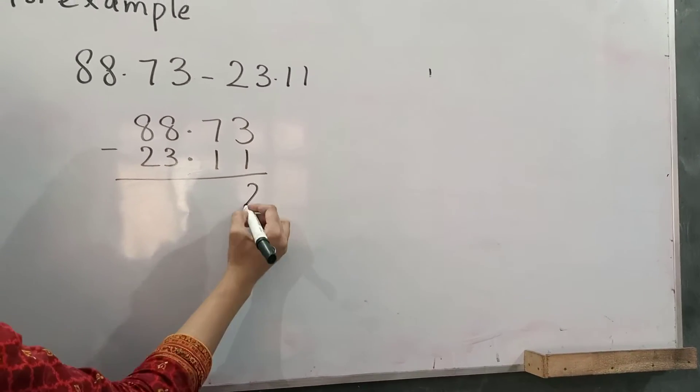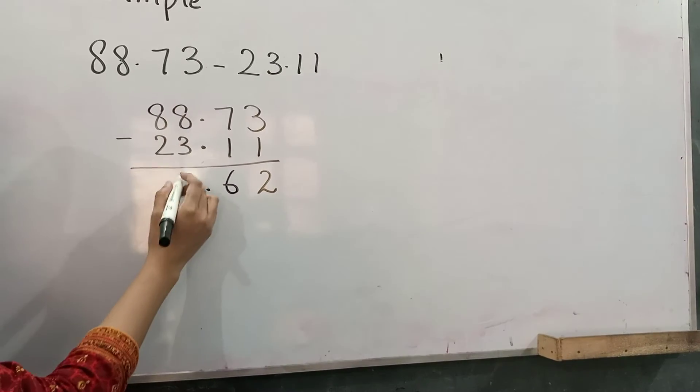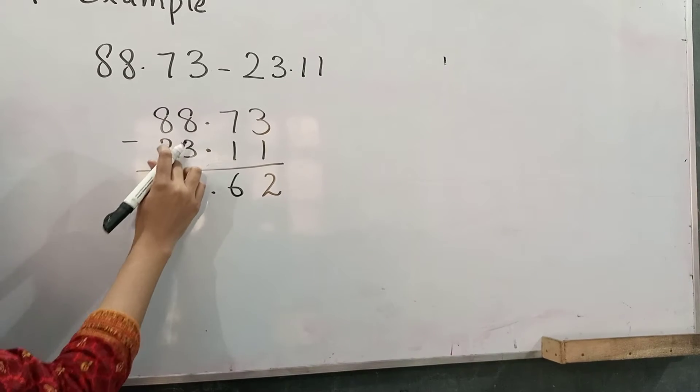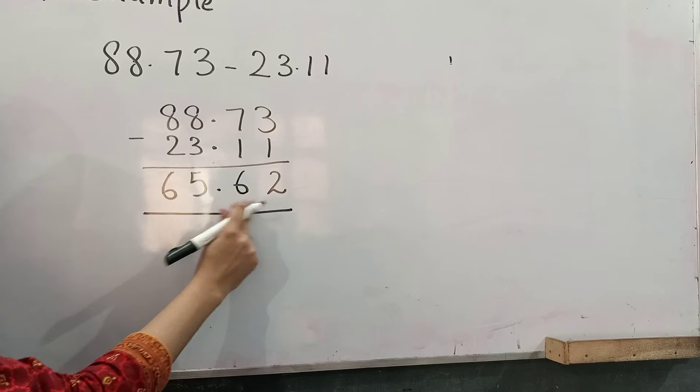3 minus 1, 2. 7 minus 1, 6. Point here, point. 8 minus 3, 5. 8 minus 2, 6. So, the answer is 65.62.